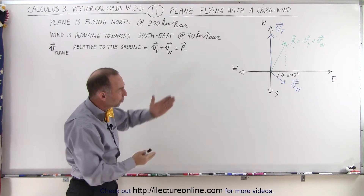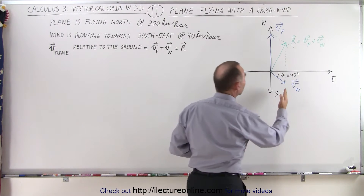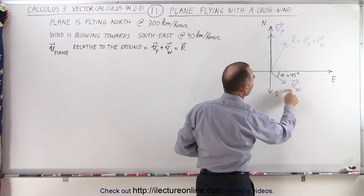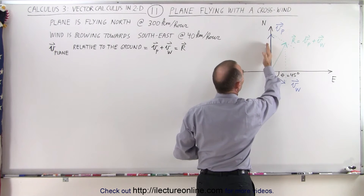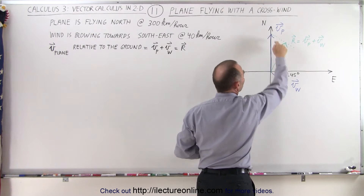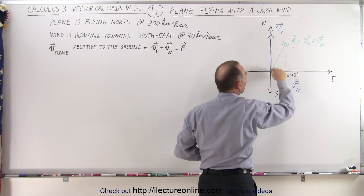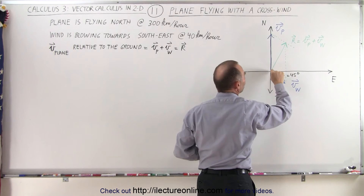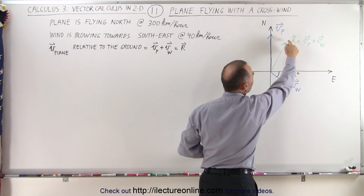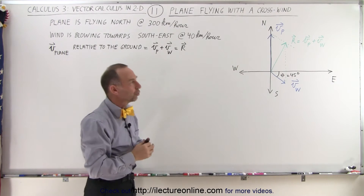The vector sum can be found using the method of parallelograms. We draw a line from the tip of vector v-sub-w, the velocity of the wind, parallel to the velocity of the plane. We also draw a vector parallel to the velocity of the wind from the tip of the plane vector. Where the two lines meet, we draw a vector from the origin to that point — that is the resultant, or the sum of the two vectors.